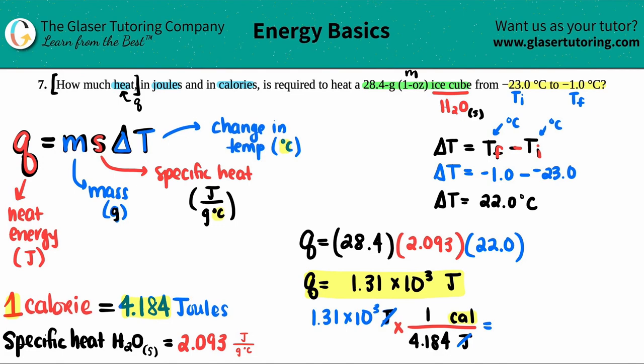1.31 times 10 to the third divided by 4.184, and we get 313 calories. This one I won't put in scientific notation, or you could say 3.13 times 10 to the second, doesn't matter to me. But these are the two answers. So this is the amount of heat needed in joules and this is the amount of heat needed in calories.